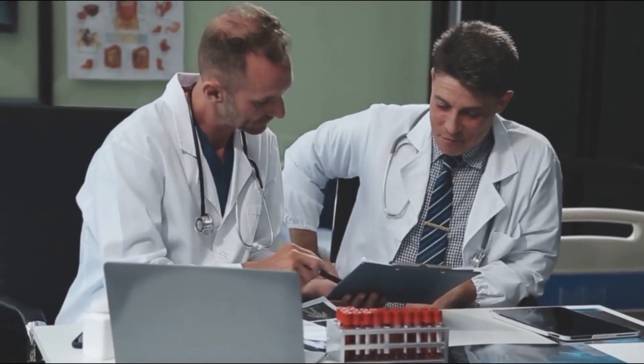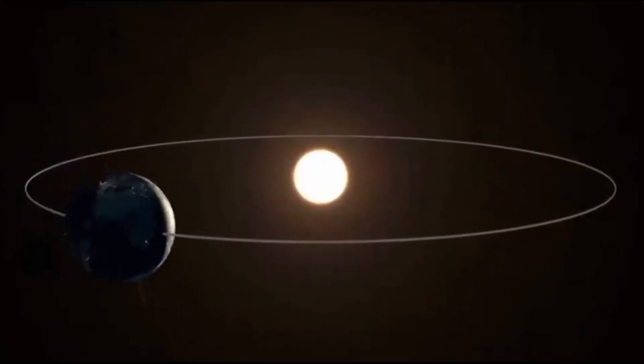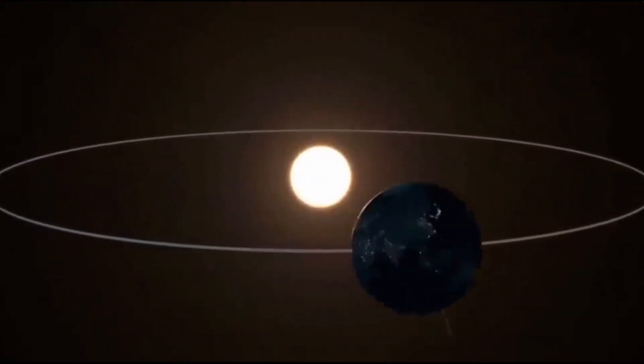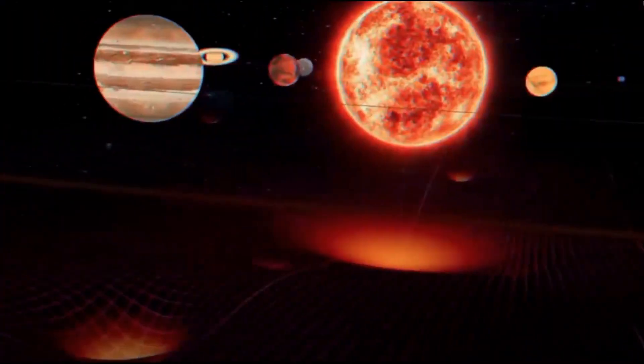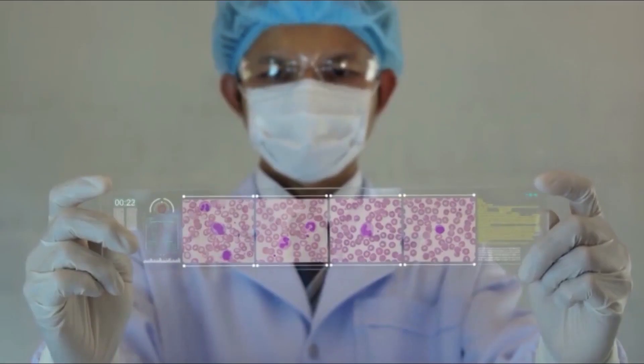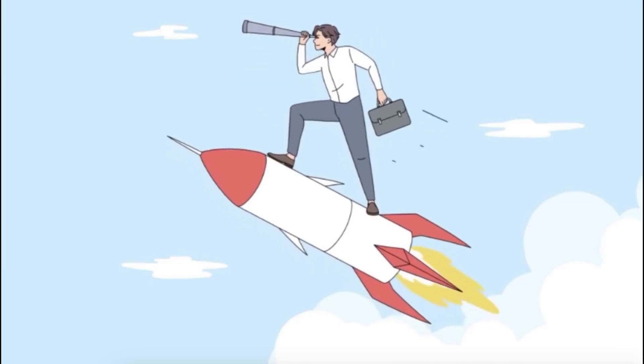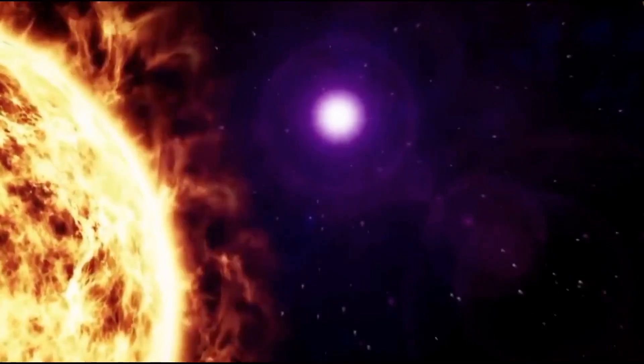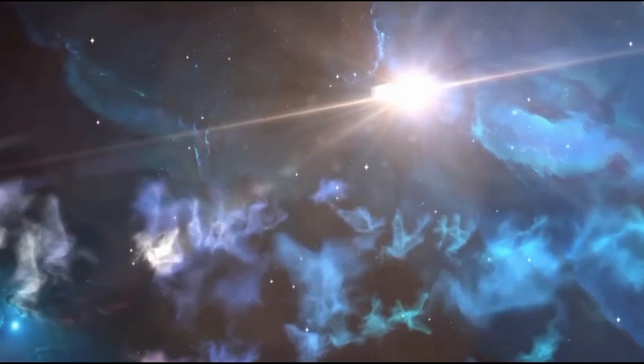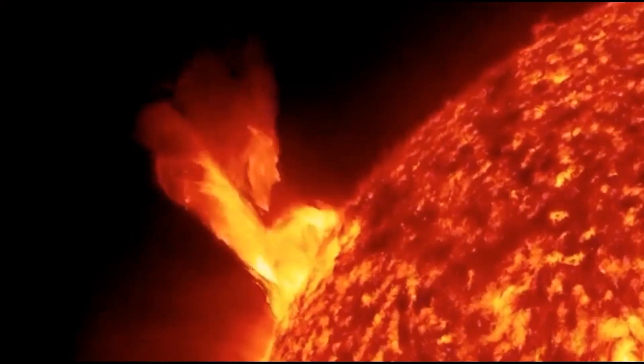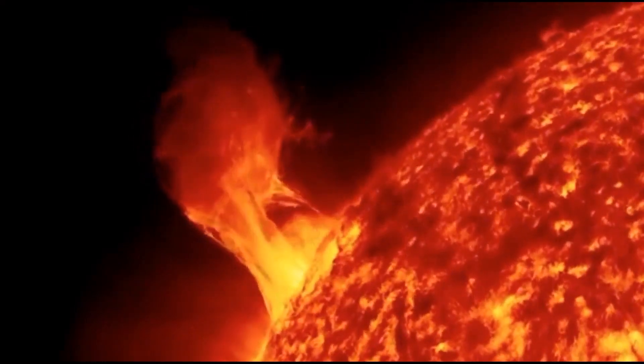According to forecasts from the World Center data on the Sunspot Index and long-term observations, the peak of solar activity is expected between mid-2024 and the end of 2025. At the same time, specialists from the Space Weather Prediction Center of the National Weather Service in the United States believe that the maximum solar activity may occur slightly later, from the end of 2024 to the beginning of 2026.